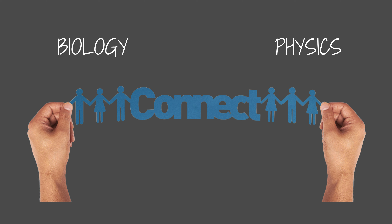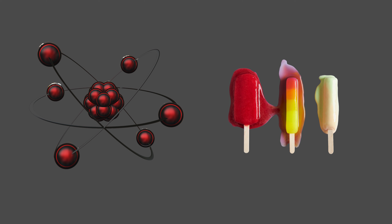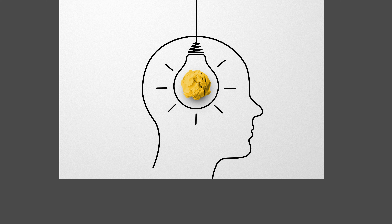Chemistry: The Central Science. Chemistry is often called the central science because it connects and overlaps with many other scientific disciplines, such as biology and physics. Chemistry helps us understand the composition, structure, properties, and changes of matter. It explains how substances interact and transform, providing insights into the natural world and the technological advancements we rely on.